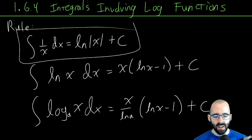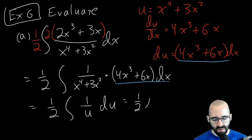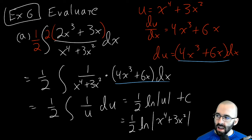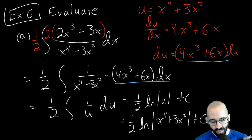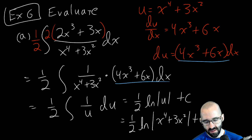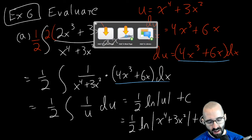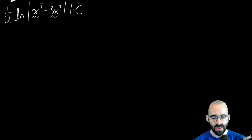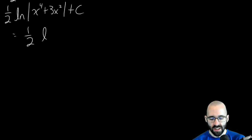The anti-derivative of 1/u is the natural log of the absolute value of u — and that's why having the absolute value matters, so we don't need to worry about the sign of u. This gives us (1/2)·ln|x⁴ + 3x²| + C. But this is not the final answer yet — the absolute values are actually redundant here because x⁴ + 3x² is always non-negative for real x, so we can drop them.